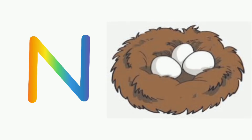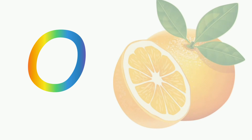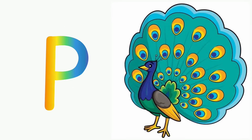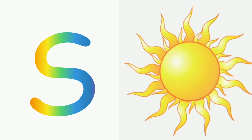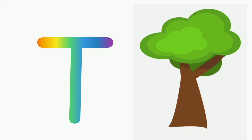N for nest, O for orange, P for peacock, Q for queen, R for rose, S for sun, T for tree.